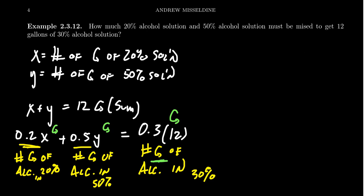Okay, so this gives us our system of equations. We get x plus y equals 12. If you don't like the decimals, we can multiply the second equation by 10, which moves all the decimals over by 1. So you get 2x plus 5y, and then you get 3 times 12 which is 36. This is the system of equations we want to solve.